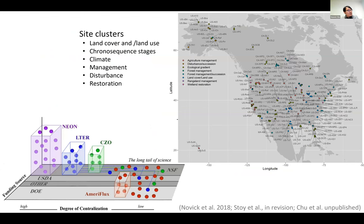Another interesting aspect I want to mention about AmeriFlux compared to other networks — like NEON, LTER, or CZO — is that AmeriFlux is a bottom-up effort. A lot of people from different research institutions get funding from different sources, build their towers in their own way and process the data, and later come together and voluntarily share within the network. We don't dictate where the towers should be. Because of this organic nature, AmeriFlux is pretty clustered — a lot of people set up a couple of towers in a small region with similar climate conditions but different land cover or land use types.